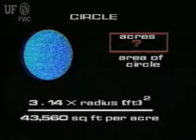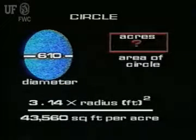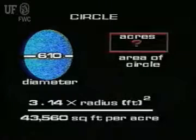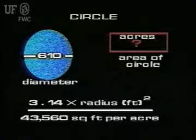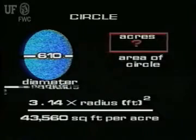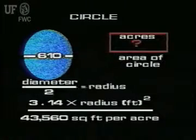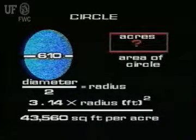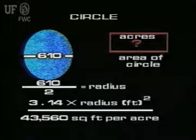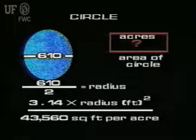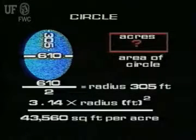For an example, let's determine the acreage of a more or less circular pond that has a diameter of 610 feet. If the diameter is 610 feet, then the radius equals diameter divided by 2, or 610 divided by 2. Therefore, the radius of this pond equals 305 feet.